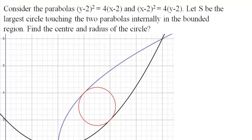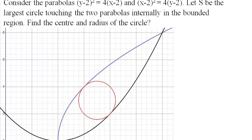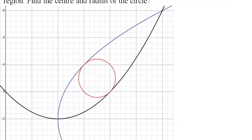Consider the parabolas (y−2)² = 4x−2 and (x−2)² = 4y−2. Let S be the largest circle touching the two parabolas internally in the bounded region. Find the center and radius of the circle. We have two intersecting parabolas and we have to find the radius of this largest circle which touches both the parabolas.